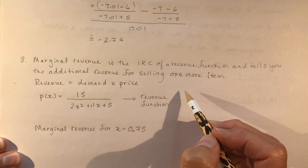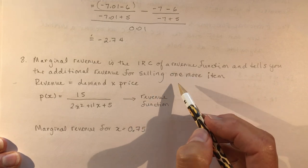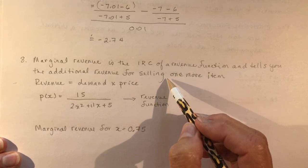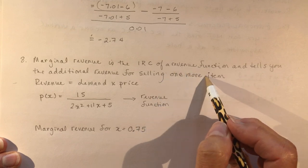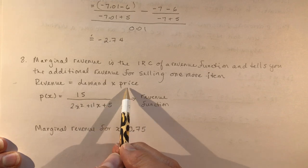Okay, so instead of it being slope, like rise over run, this is giving you how much more it costs you, or not how much more it costs, but how much more money you're making for selling one more item. So the revenue is demand times price.